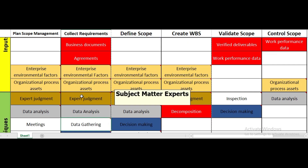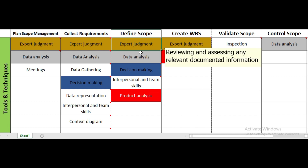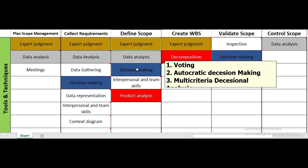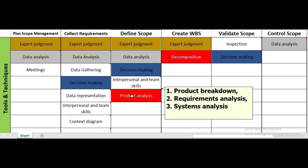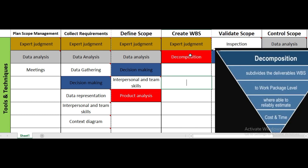In the define scope process, tools and techniques include expert judgment — to help define how the scope will be established — data analysis (reviewing and assessing relevant documented information), decision-making techniques such as voting or multi-criteria decision analysis, and interpersonal and team skills. Product analysis is a particularly important and unique tool here, which includes product breakdown structure, requirements analysis, and systems analysis.